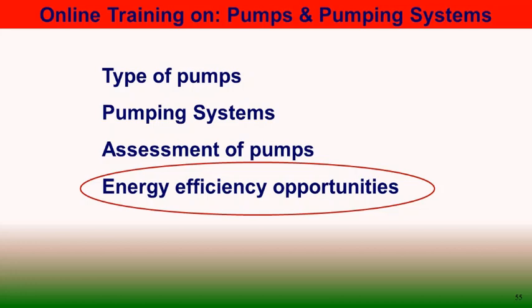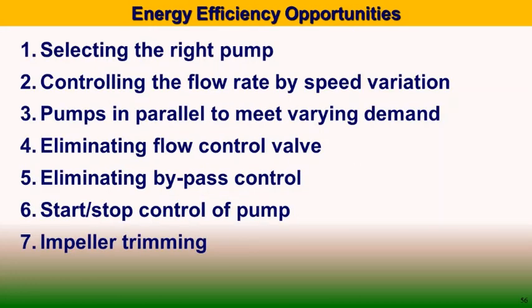The main areas for optimizing energy consumption of a pump include: selection of the right pump with correct size and speed, controlling flow rate by speed variation, operating pumps in parallel to meet varying demand, eliminating flow control valves or bypass control systems, start and stop control of pump, and impeller trimming. All these methods can effectively give energy-efficient operation of pumping systems.